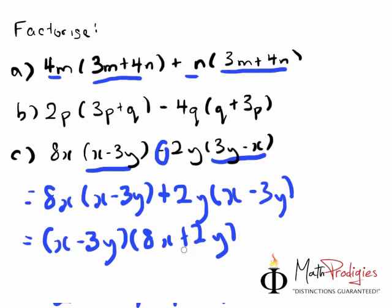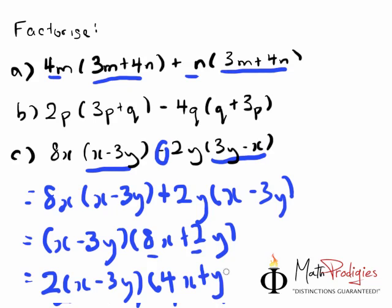And wait, look, we still have another common factor here. So what must we do? We must take out that 2. Then you put X minus 3Y. Then what do you have? You have 4X plus Y. And that is the answer.